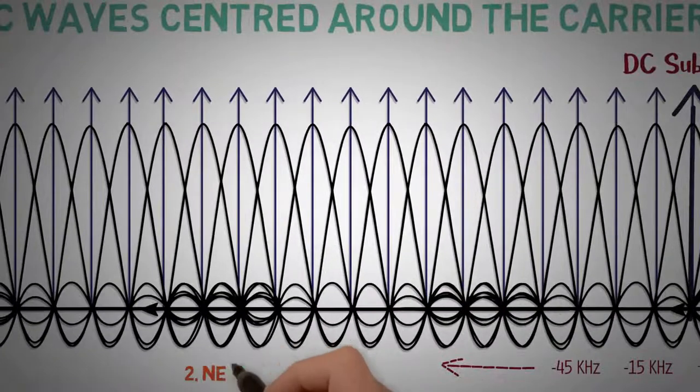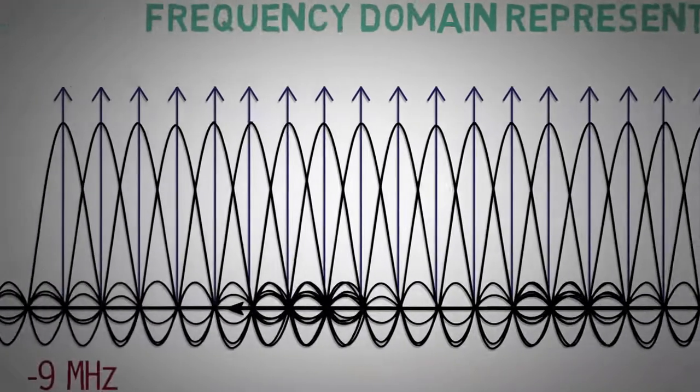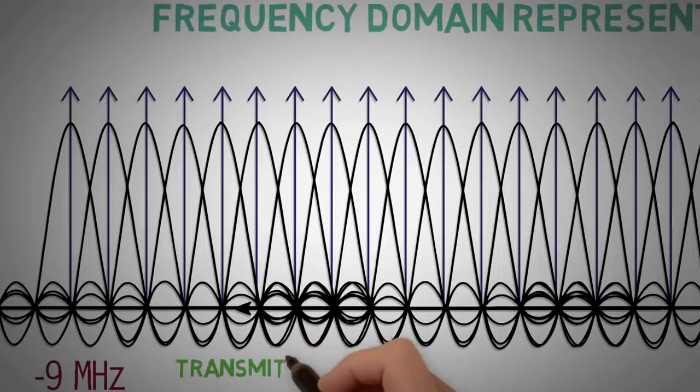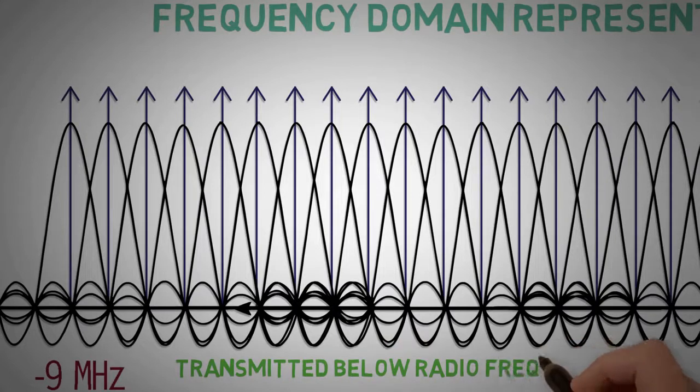Secondly, presence of negative frequencies. It can be explained by the fact that the sub-carriers are transmitted below the radio carrier.